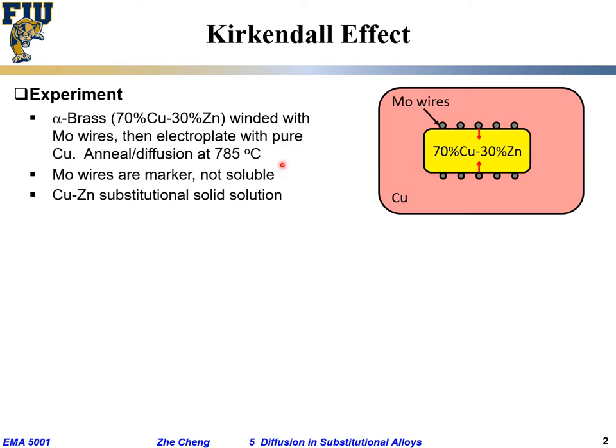They performed annealing in an inert atmosphere at 785°C — a pretty high temperature, not yet melting, but high — and used vacuum or inert atmosphere to avoid oxidation. The moly wires are the markers; they are not soluble in copper or zinc. Copper and zinc have different melting points but actually similar atom sizes, which means they would form a substitutional solid solution — similar size atoms can't easily fit into interstitial sites.